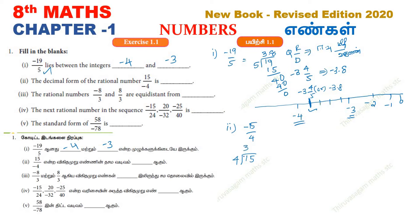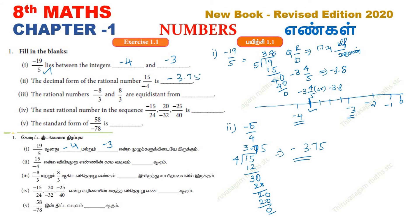We divide: 4 goes into 15. Working through the long division — 4 into 15 gives 3, remainder 3; bring down 0 to get 30; 4 into 30 gives 7, that is 28; remainder 2; bring down 0; 4 into 20 gives 5. The decimal value is minus 3.75.